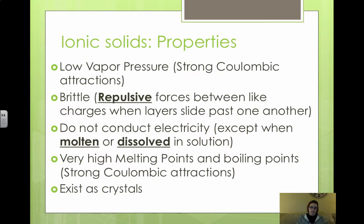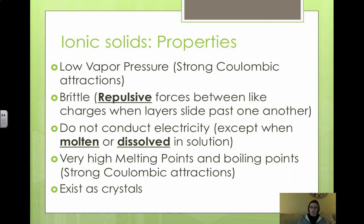Ionic solids do not conduct electricity as a solid because the valence electrons in ionic compounds are confined to just the anion and are not able to move around the solid. They are typically insulators — they do not conduct electricity except when molten or dissolved in solution. When dissolved, you have free ions which allows for free flowing of the electrons and ions. Ionic solids also have very high melting and boiling points because of their strong Coulombic attraction, and they typically exist as crystals.